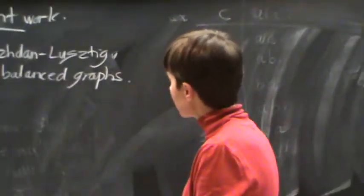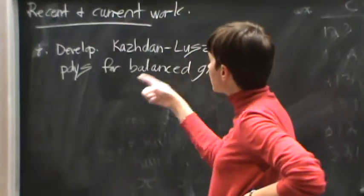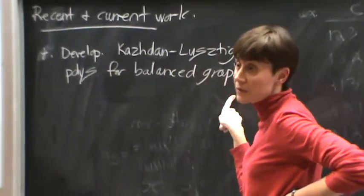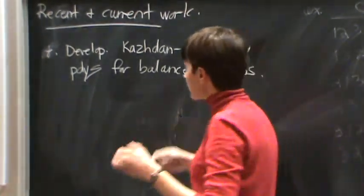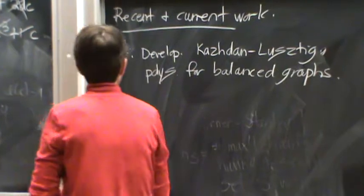Actually, no. I'm saying the wrong thing. That's something else. So we can actually develop Kazhdan-Lusztig polynomials for balanced graphs. So something called, by the result of Dyer, you can actually do this. So it's a little bit tricky, though, if we're looking at this.